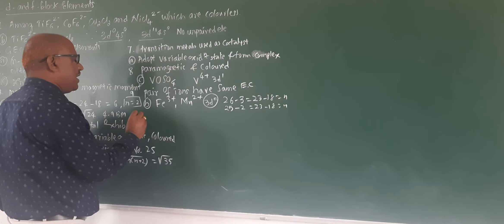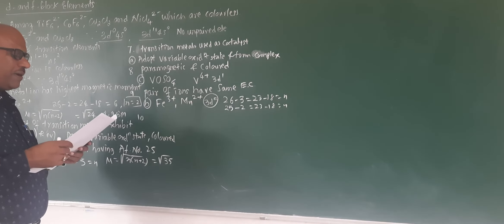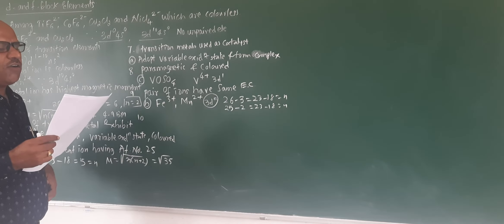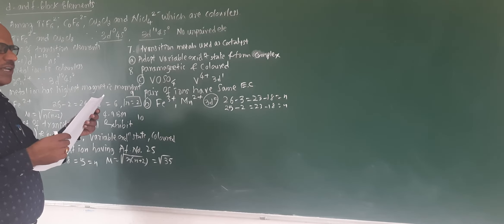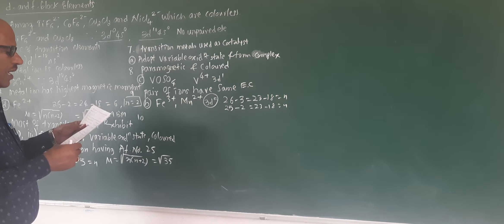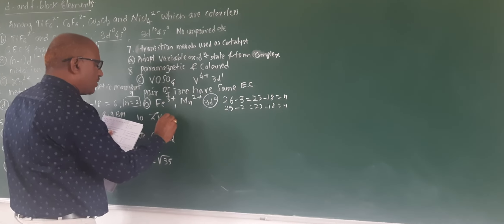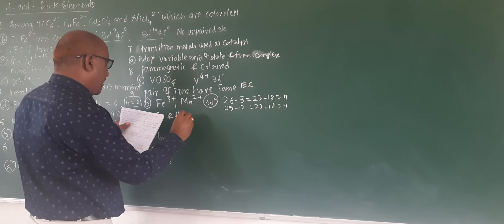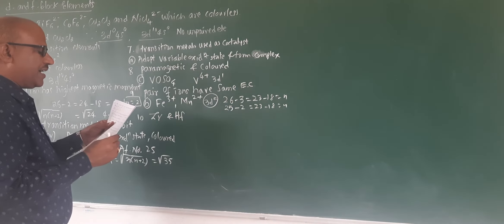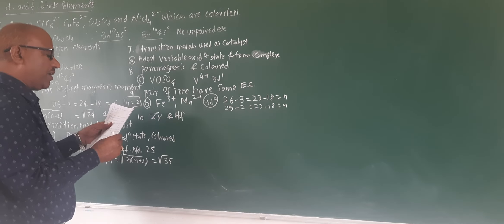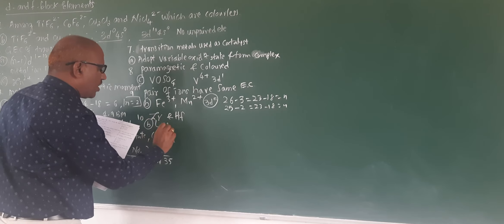Question 10: Zirconium and hafnium have almost equal atomic and ionic radii because of lanthanide contraction. Zirconium and hafnium will have the same atomic radius and ionic radius because of the lanthanide contraction.